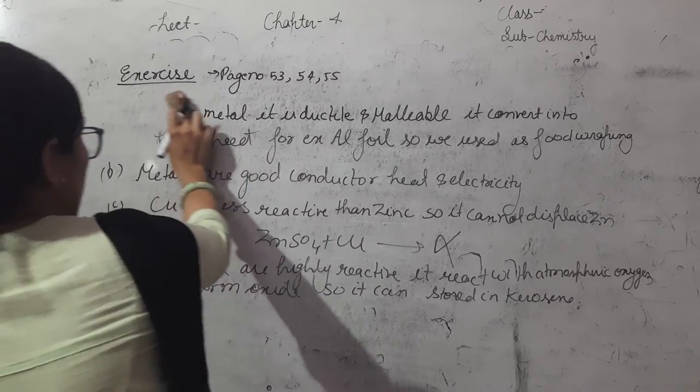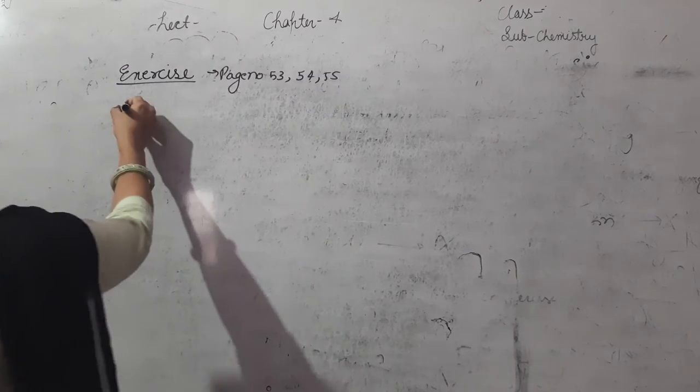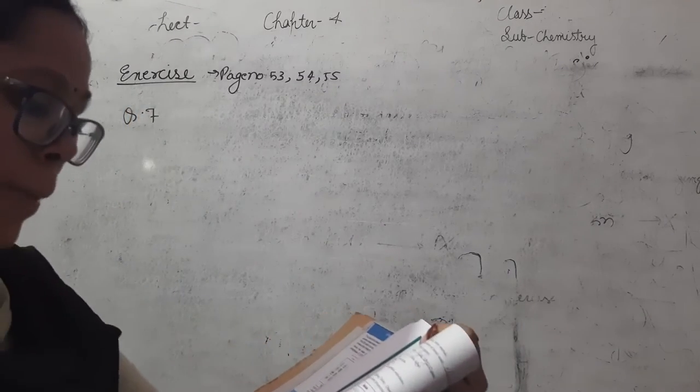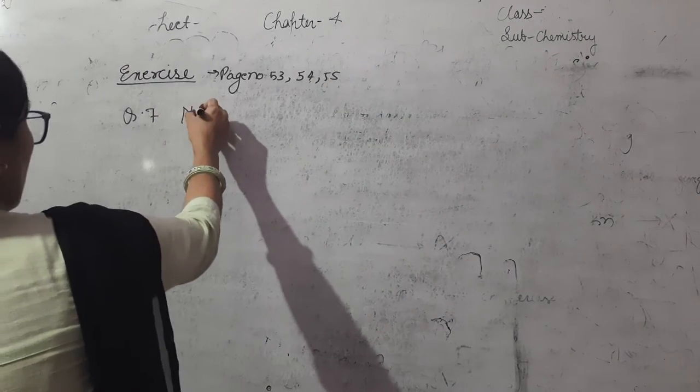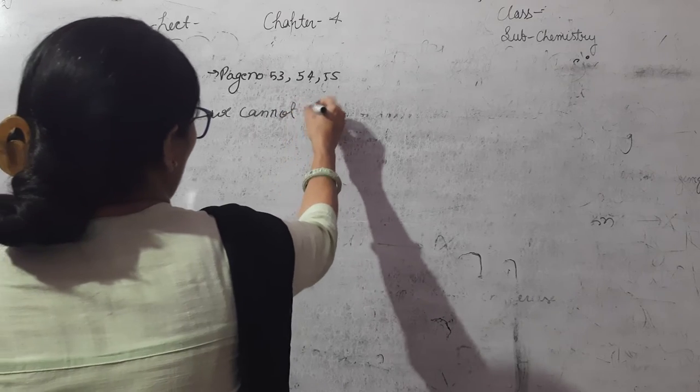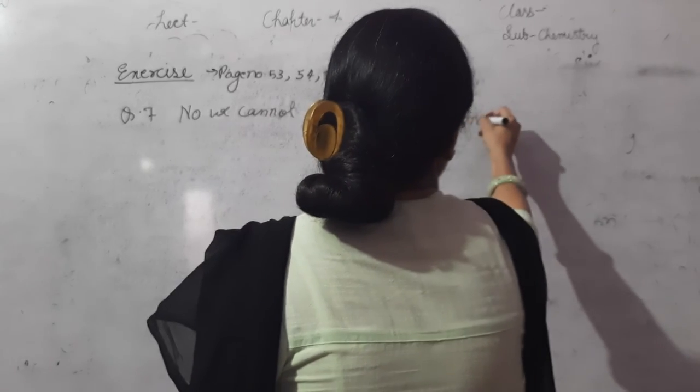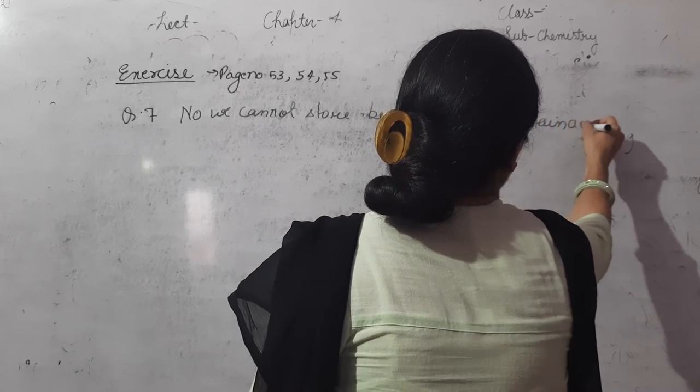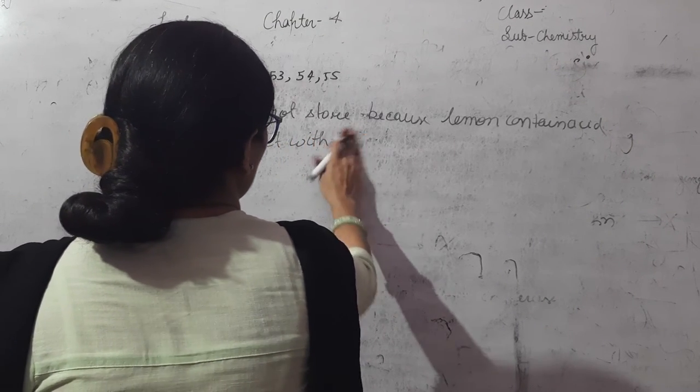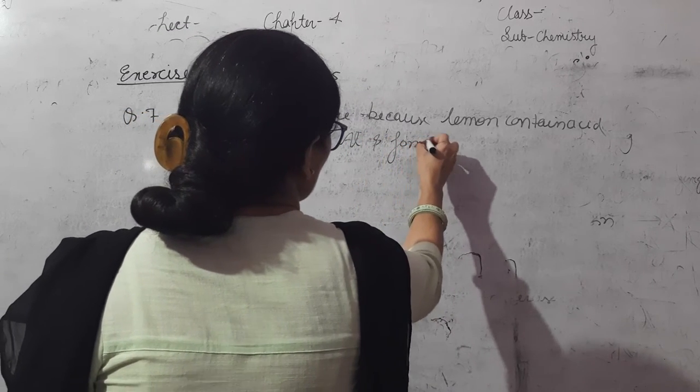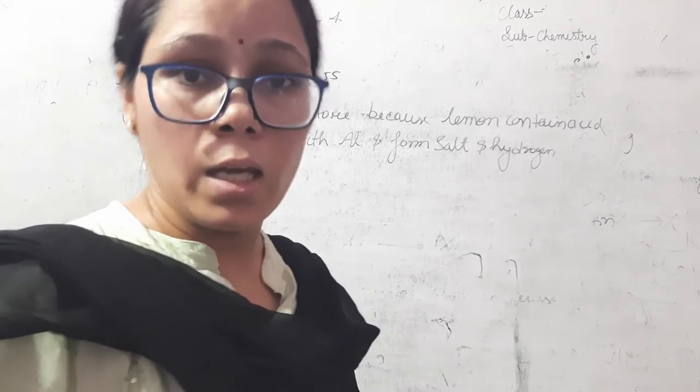Now we will discuss question number 7. Can you store lemon pickle in an aluminum utensil? No, we cannot store. Because lemon contain acid. It react with aluminum and form salt and hydrogen gas. So lemon cannot be kept in aluminum vessels.